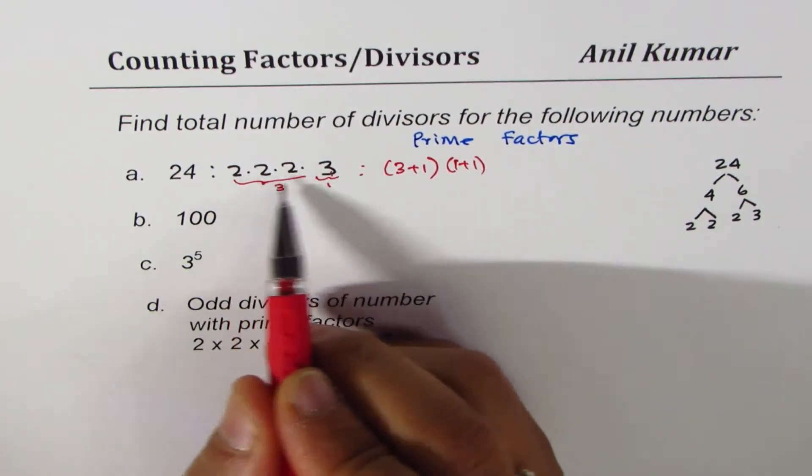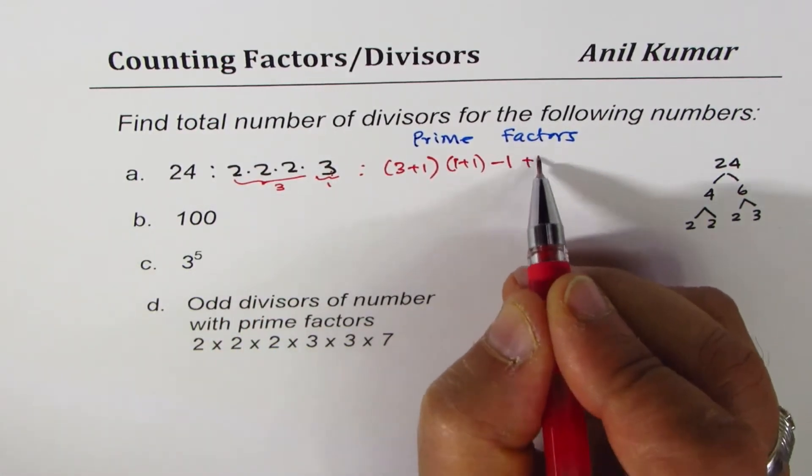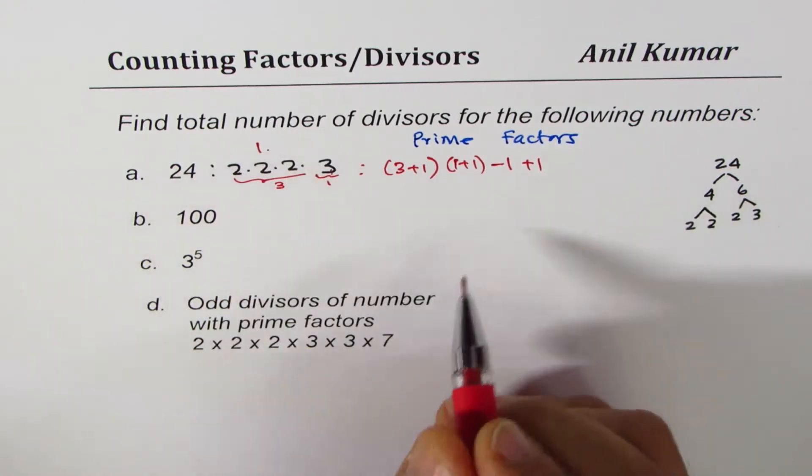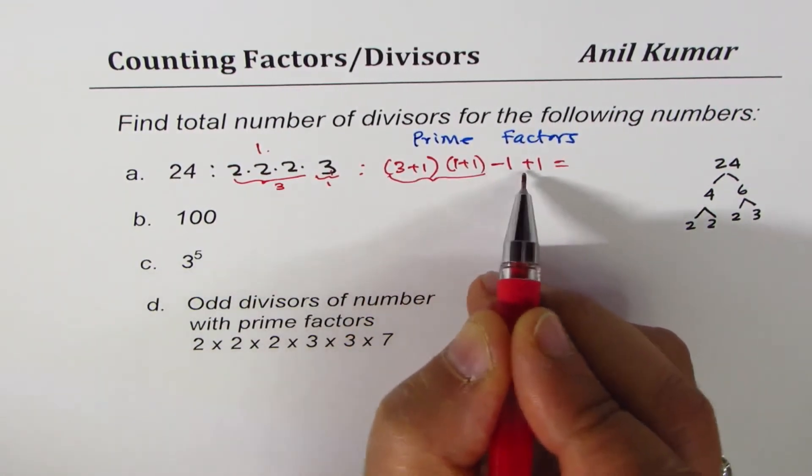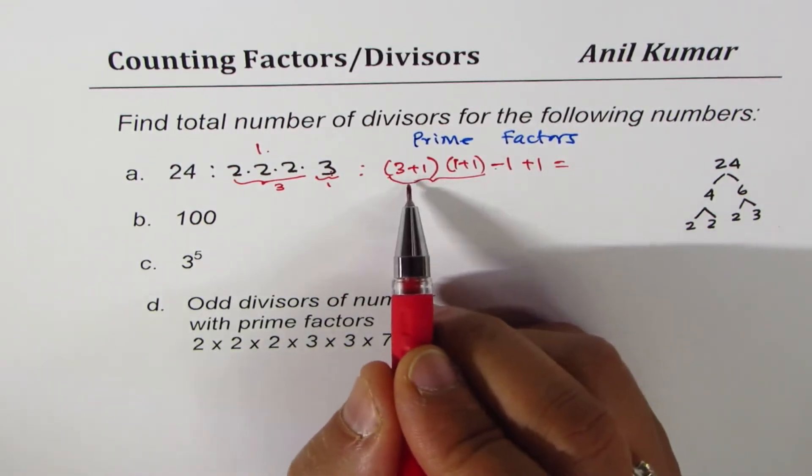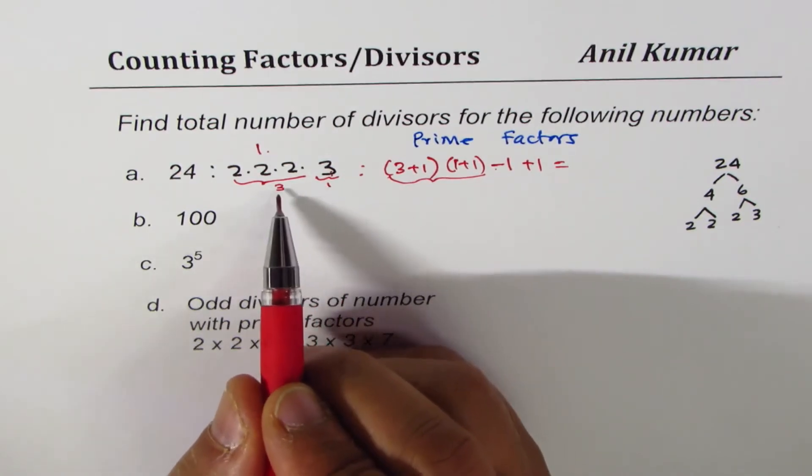Now not taking any one of them means minus 1, however number 1 is also a factor, right? 1 is always a factor or a divisor. Adding that up gives us only these combinations, so in our formula we need not do minus 1 plus 1, we'll straight away add 1 to the number of factors of similar kind, multiply them and get the result.